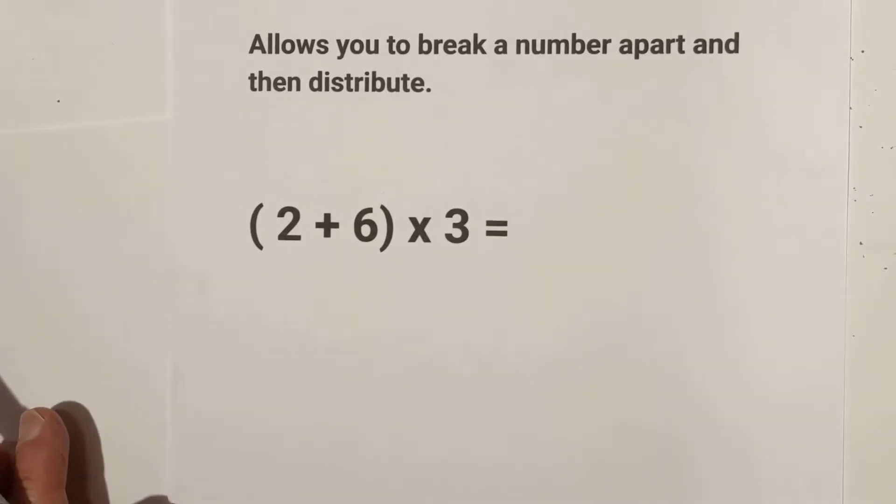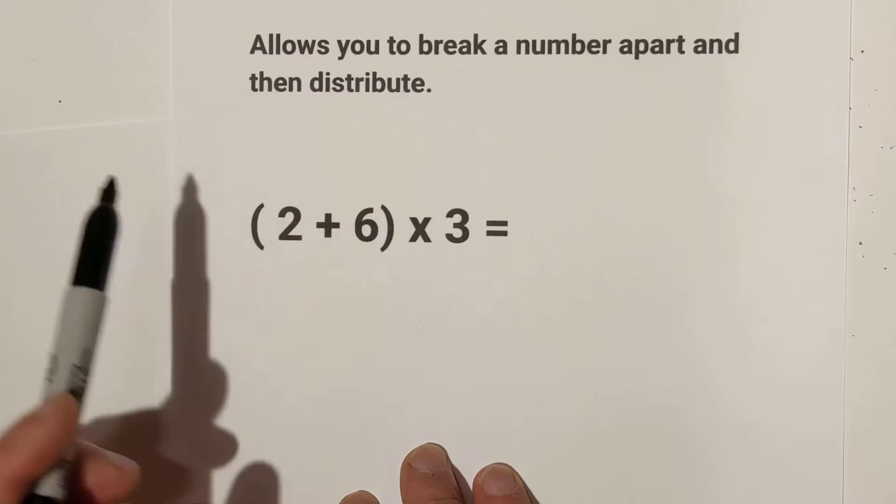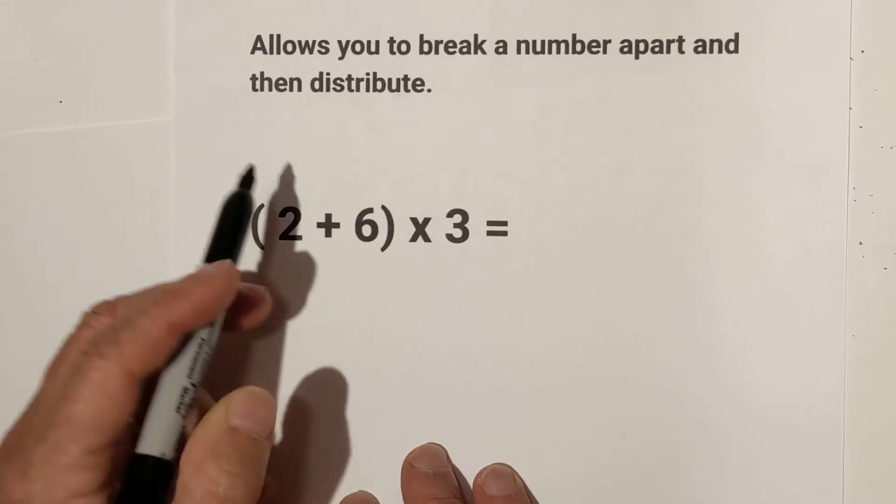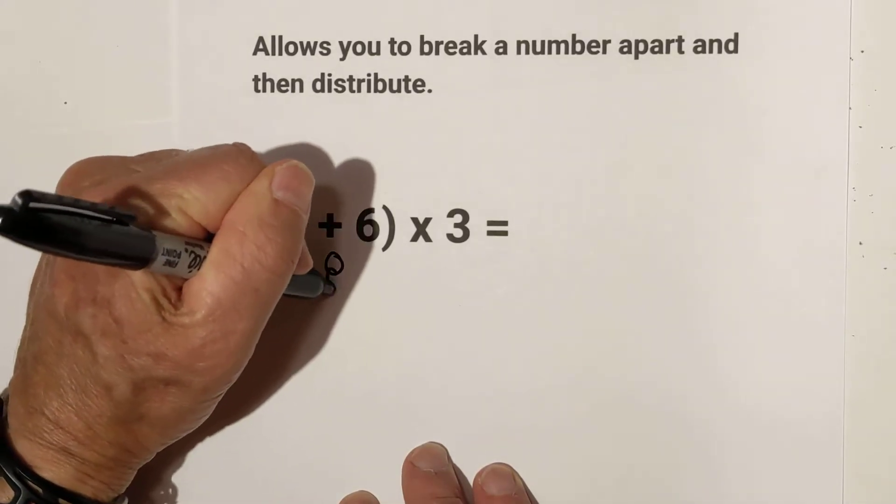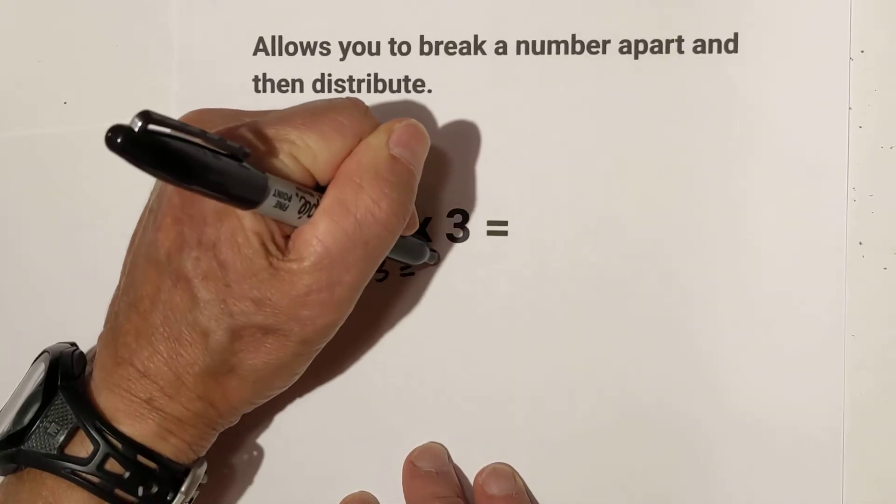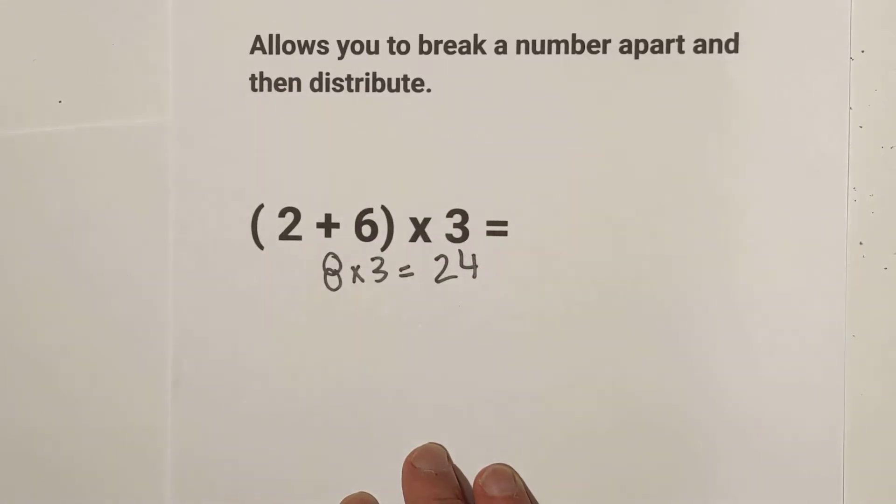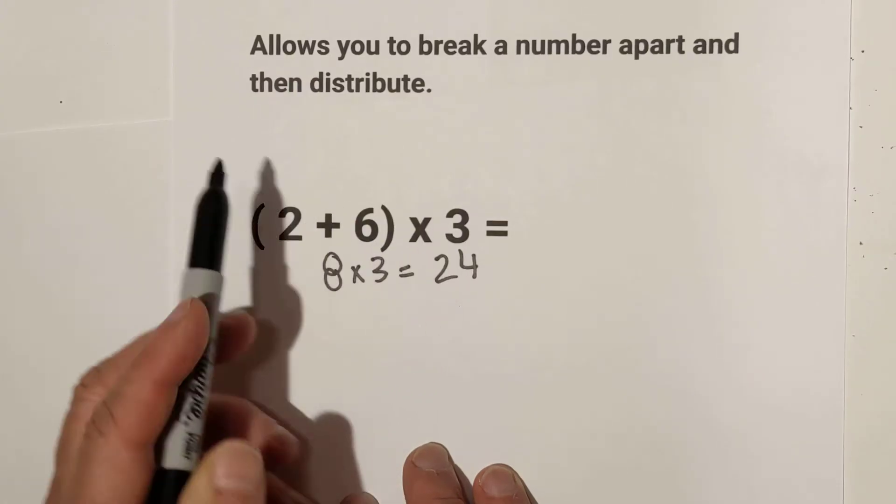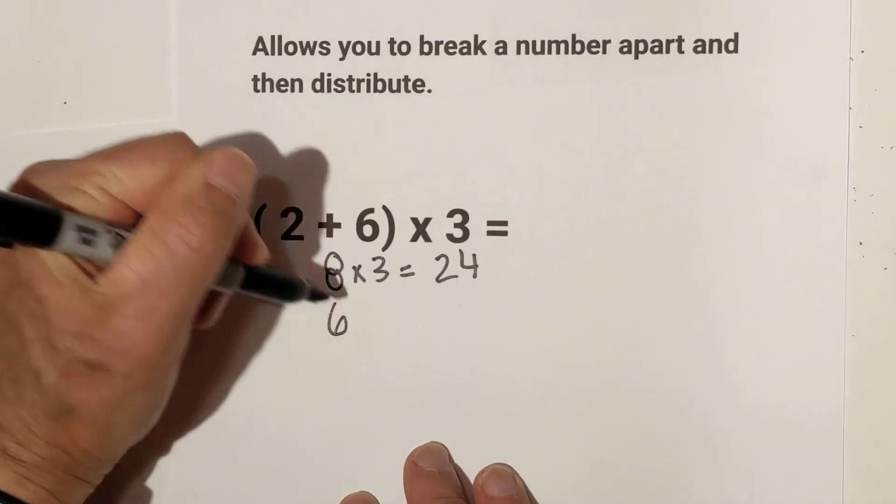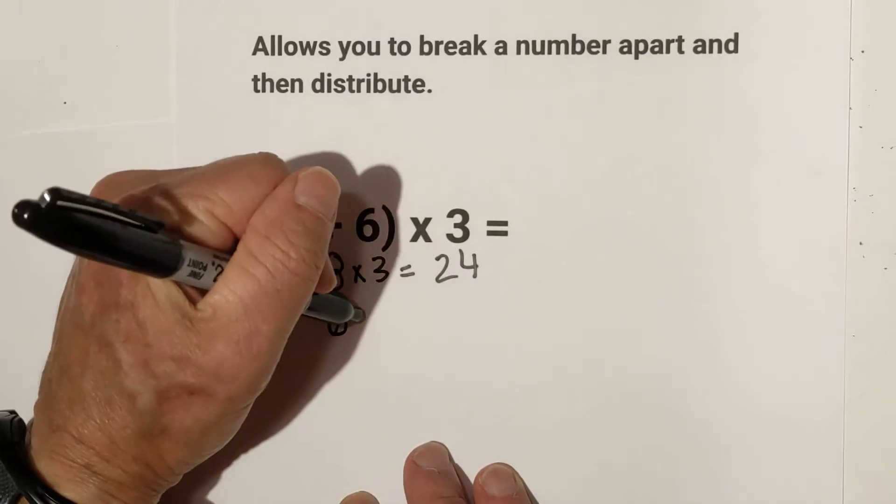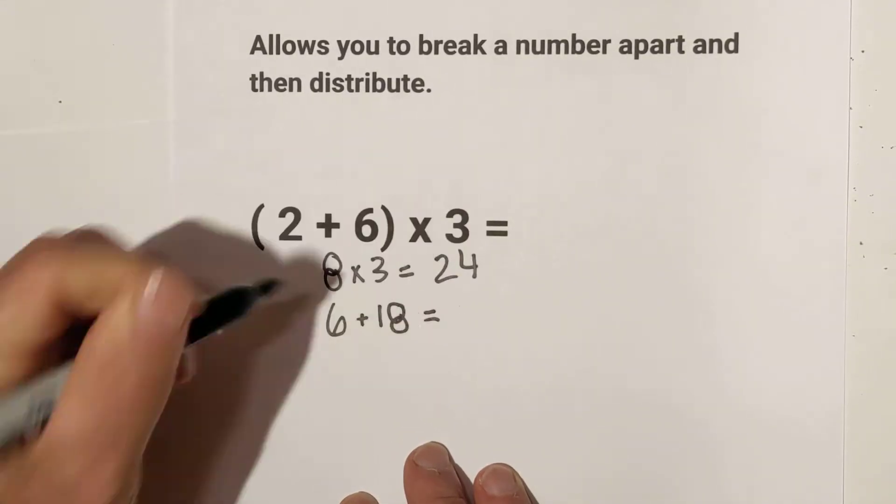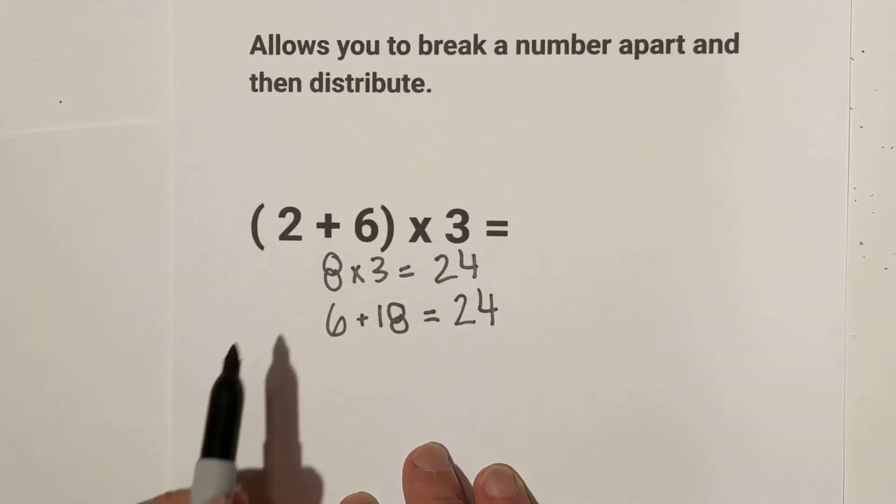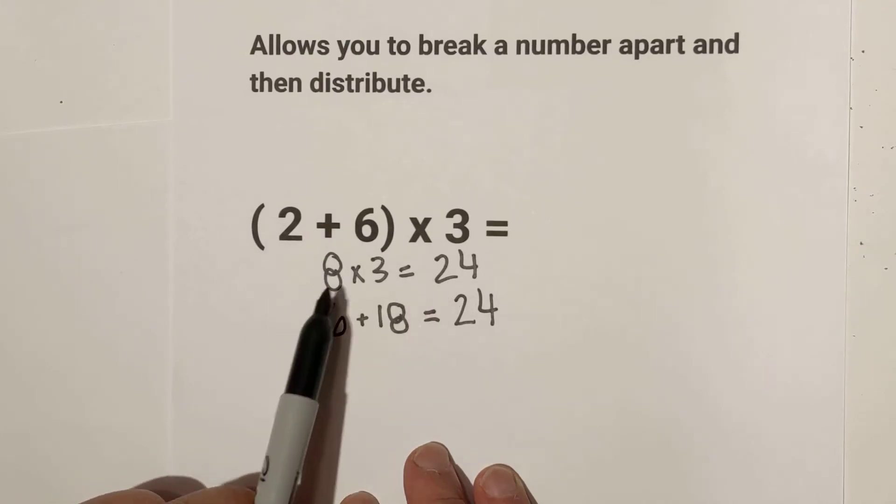Let's look at what it means. You can either add these two numbers together if they're like terms and then multiply by three. That's 8, 16, 24. Or you can distribute the 3: 3 times 2 is 6, 3 times 6 is 18, and 18 plus 6 is 24. So these two methods are equal.